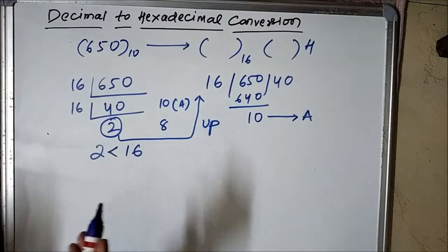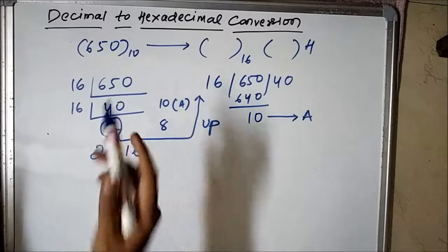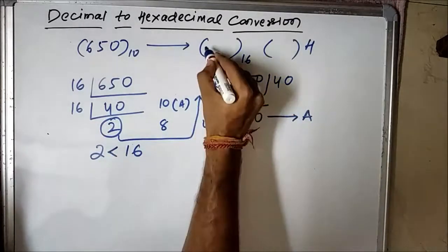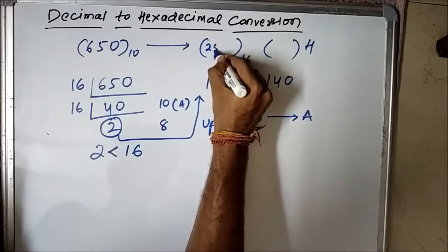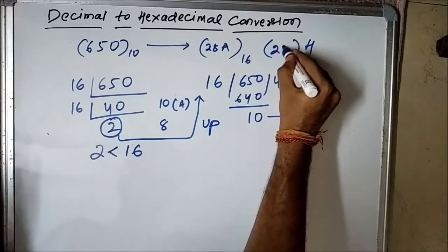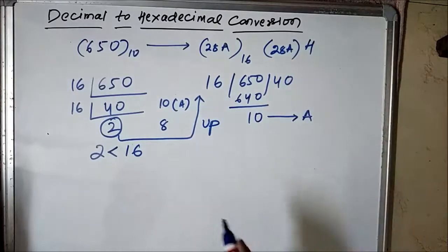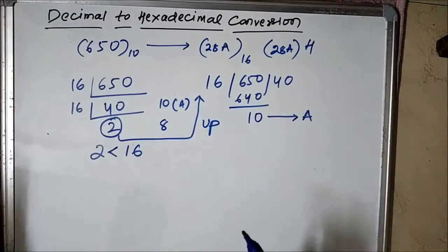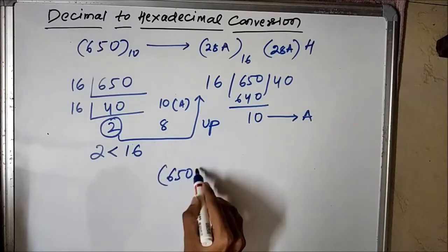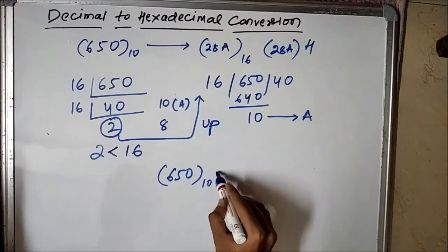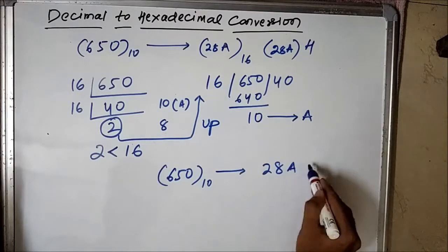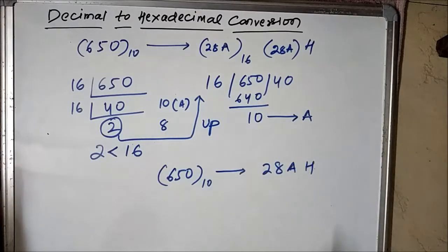So 650 in decimal is 2, 8, A in hexadecimal form — because 10 is written as A in hexadecimal.